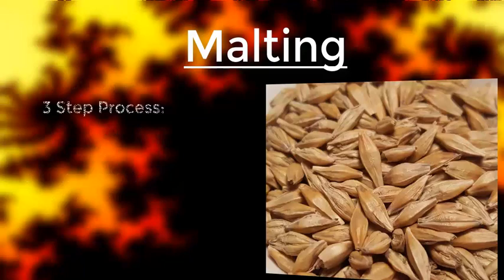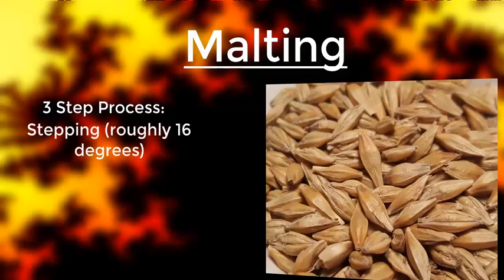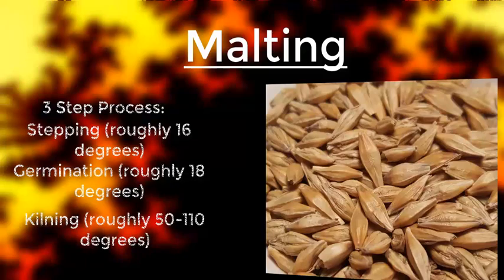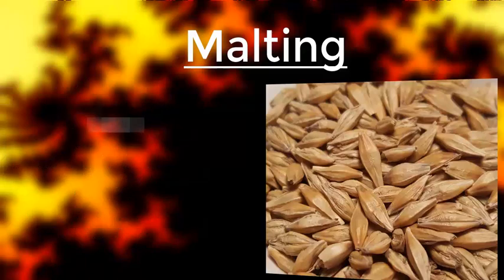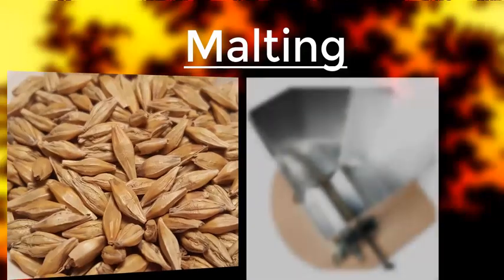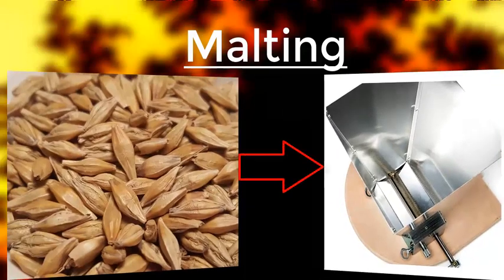In more specific terms, it goes through a three-step process: steeping at roughly 16 degrees Celsius, then germination at roughly 18 degrees Celsius, and kilning at roughly 50 to 110 degrees Celsius. This process is done using water, heat, and the help of enzymes. After this, they are essentially malted barley seeds. The malt is then sent to the mill — the next stage — where the grains are cracked, which helps release the starch inside the malt.